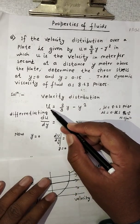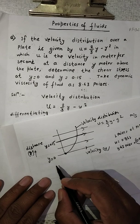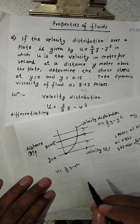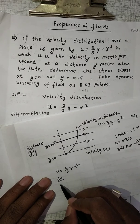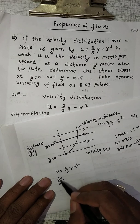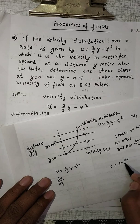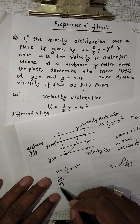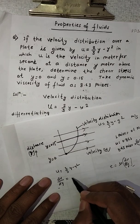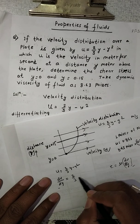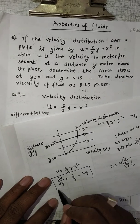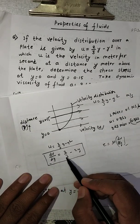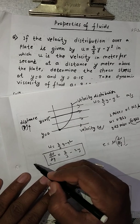Now we will differentiate u to get the velocity gradient. u = 2/3·y - y², so differentiating with respect to y: du/dy gives the velocity gradient. We know that τ = μ·(du/dy), so we need this value. After differentiating: du/dy = 2/3 - 2y. This is the velocity gradient.